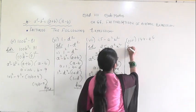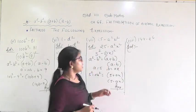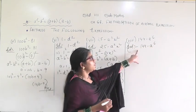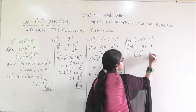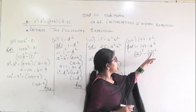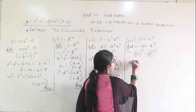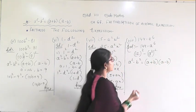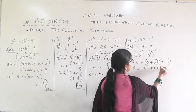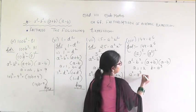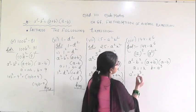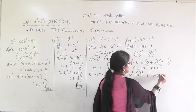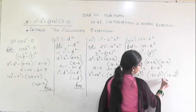This exercise is very easy — just convert the expression into the form of a squared minus b squared. Here you are given 144 minus a to the power 6. 144 is the square of 12, so write 12 squared. And a to the power 6 is (a cubed) squared. So this is in the form of a squared minus b squared, giving (a plus b)(a minus b), where a equals 12 and b equals a cubed. Substituting: 12 squared minus (a cubed) squared gives (12 plus a cubed)(12 minus a cubed). This is the answer.